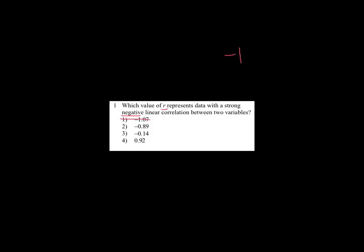So we're going to cross off one right away. That's impossible. And then number two would be the strongest of the negative correlations. This one, we're looking for just the strongest linear relationship. Could be positive or negative.